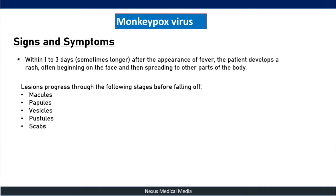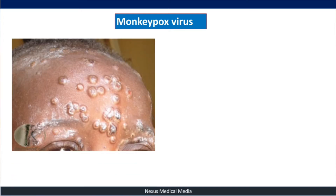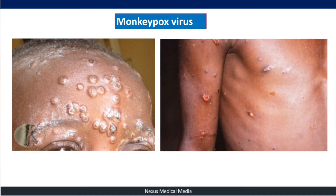The lesions progress through the following stages before falling off: macules, papules, vesicles, pustules, and scabs. The illness typically lasts two to four weeks. In Africa, monkeypox has been shown to cause death in as many as one in ten persons who contract the virus.